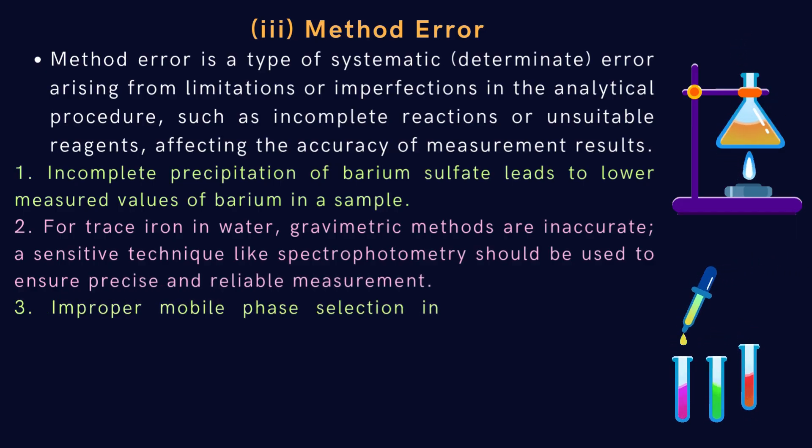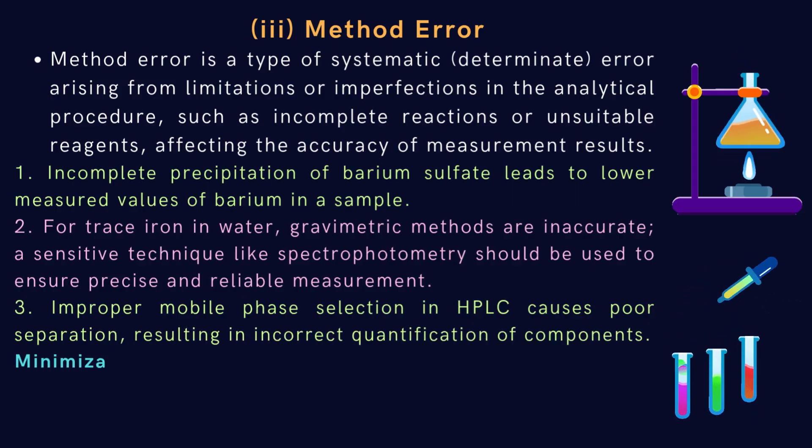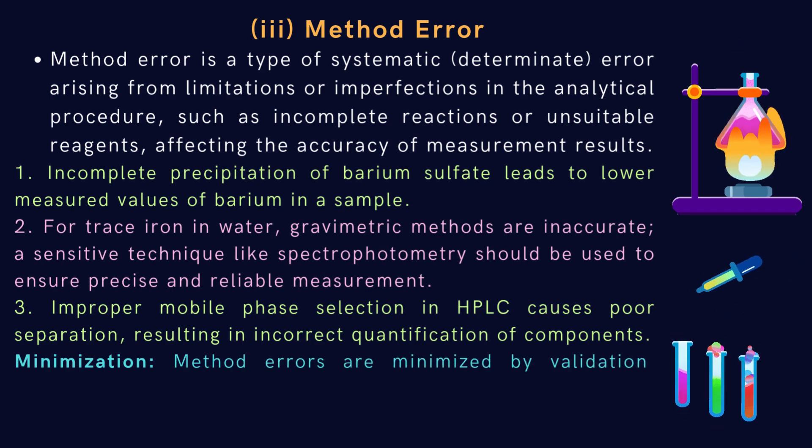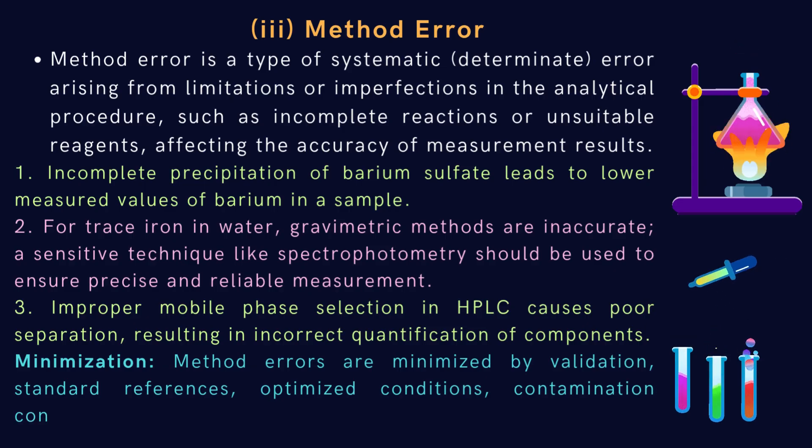Third example: improper mobile phase selection in HPLC causes poor separation, resulting in incorrect quantification of components. Minimization: method errors are minimized by validation, standard references, optimized conditions, contamination control, and proper procedures.